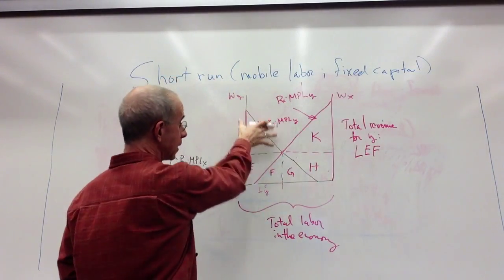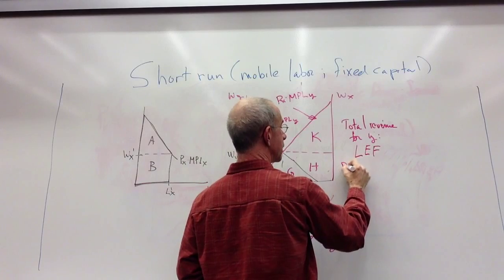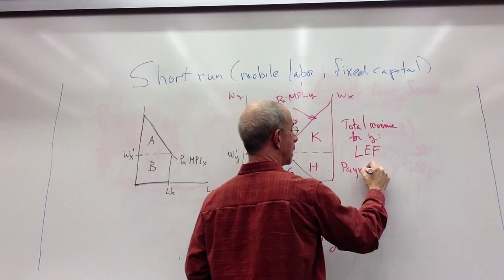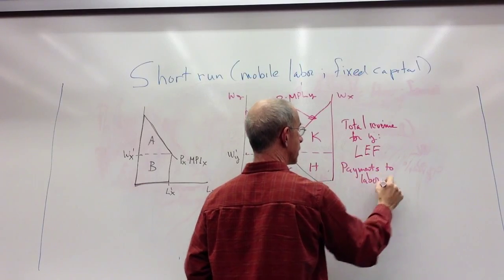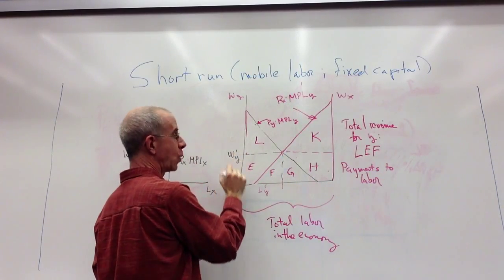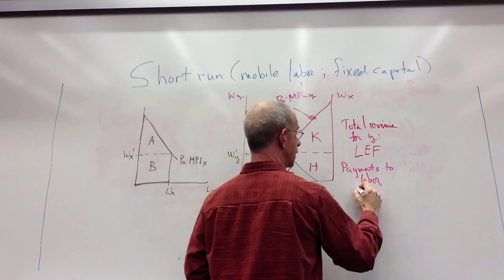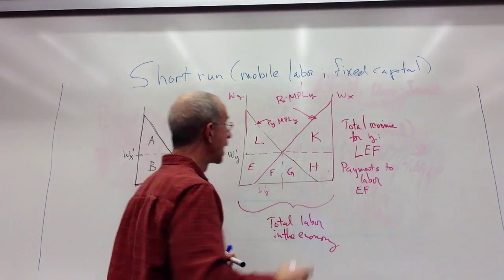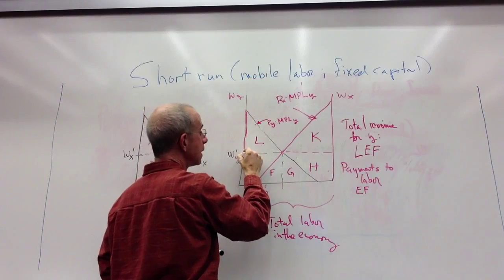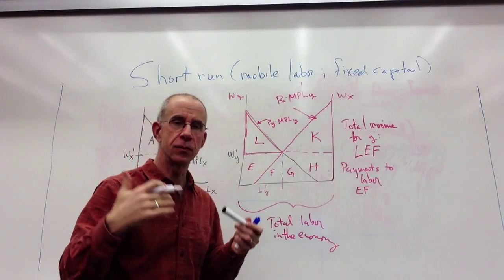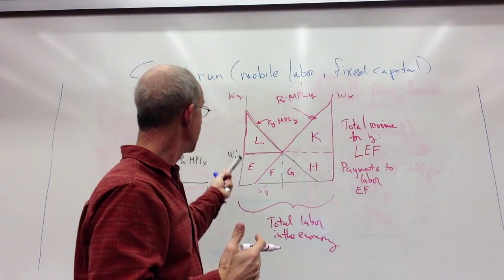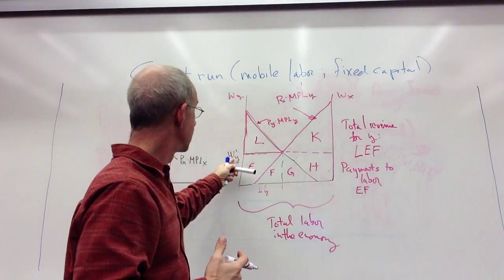The payments to labor, total payments when you're at this wage Y, is E, F. So L is the payments to capital in industry Y when they pay that wage.